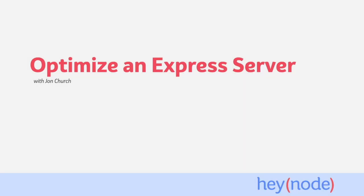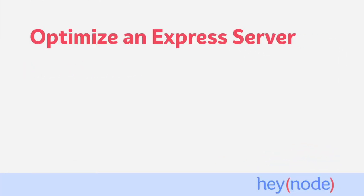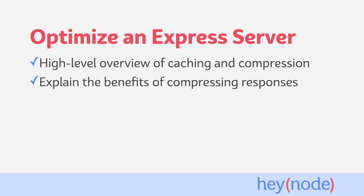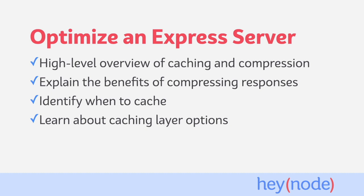We can optimize some aspects of our Express API server to increase its performance. The two strategies we'll be looking at are caching and compression. In this tutorial, we'll give an overview of caching and compression, explain the benefits of compressing responses, talk about scenarios when caching is appropriate and when it shouldn't be used, and learn about different options for implementing a caching layer in an application.